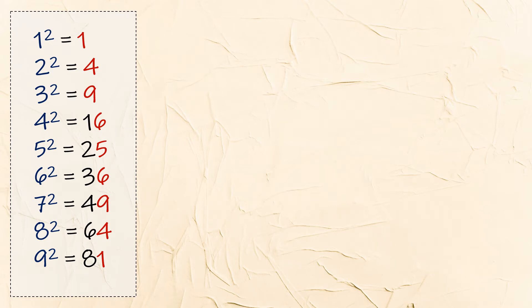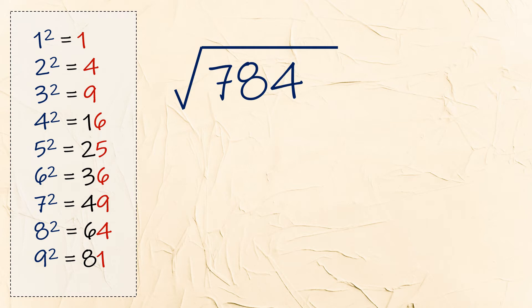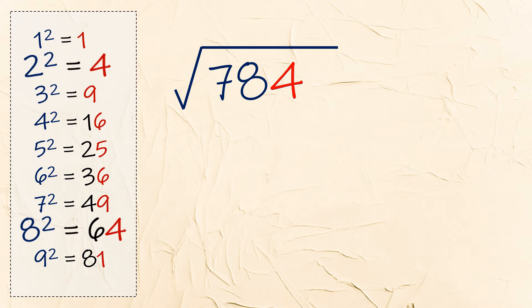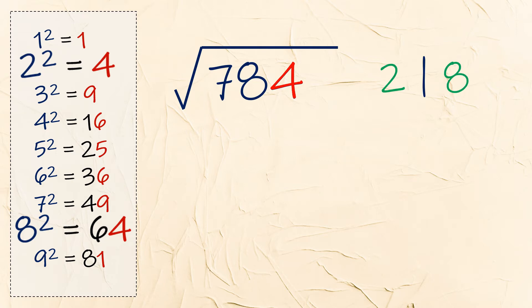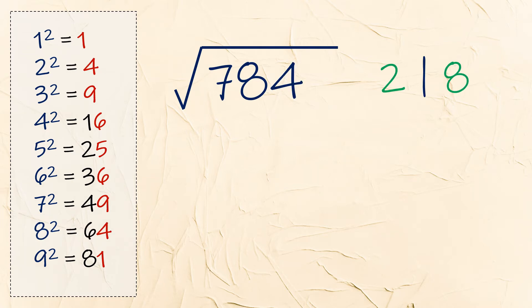Let's take note of the last digit of these squares because we're going to use them later on. Now, how will we get the answer of positive and negative 28 from the square root of 784 in just 3 seconds? First, look at its last digit which is 4. Now look for the squares that end with 4 — we have 2 squared and 8 squared. So the answer either ends with 2 or with 8.